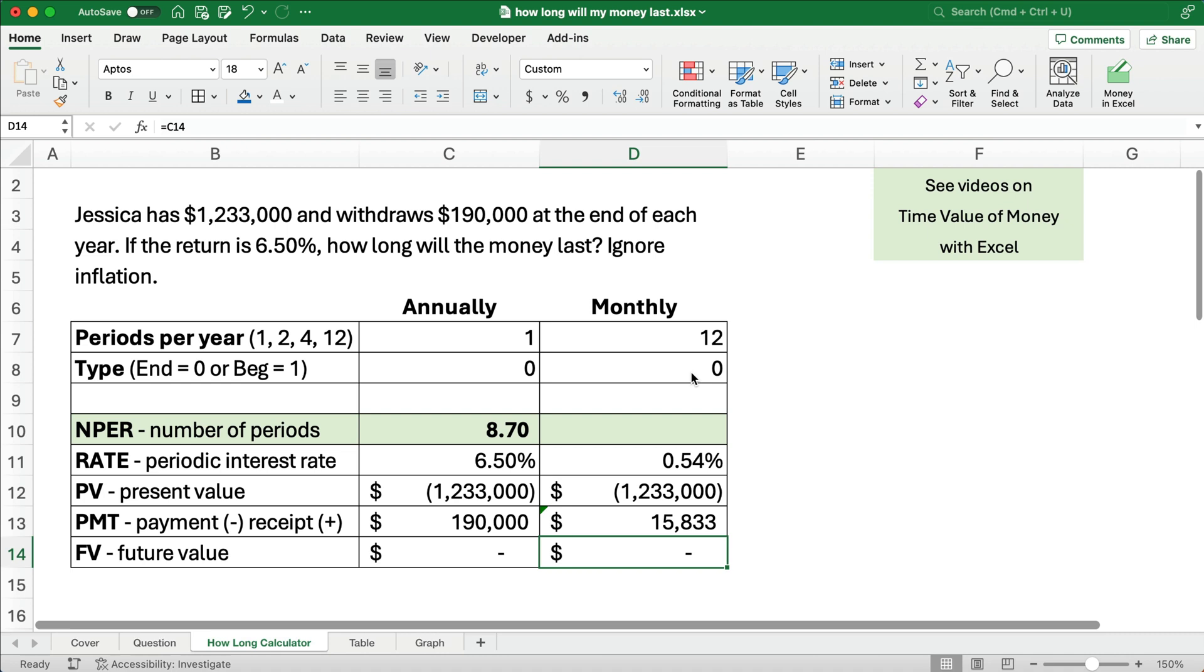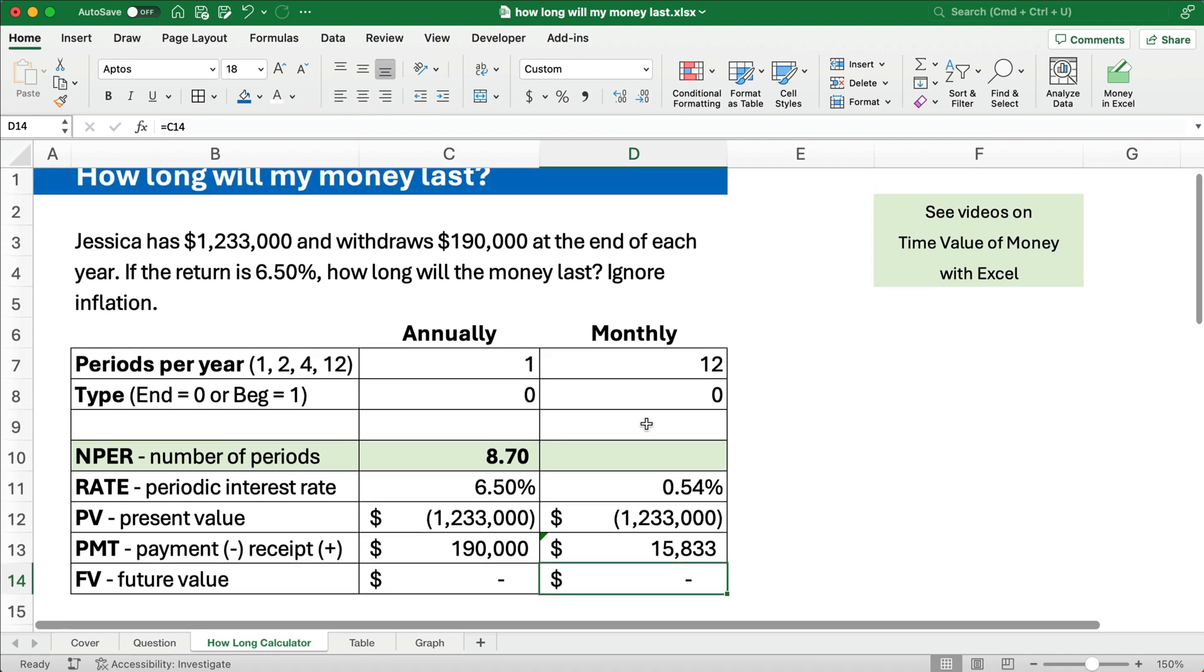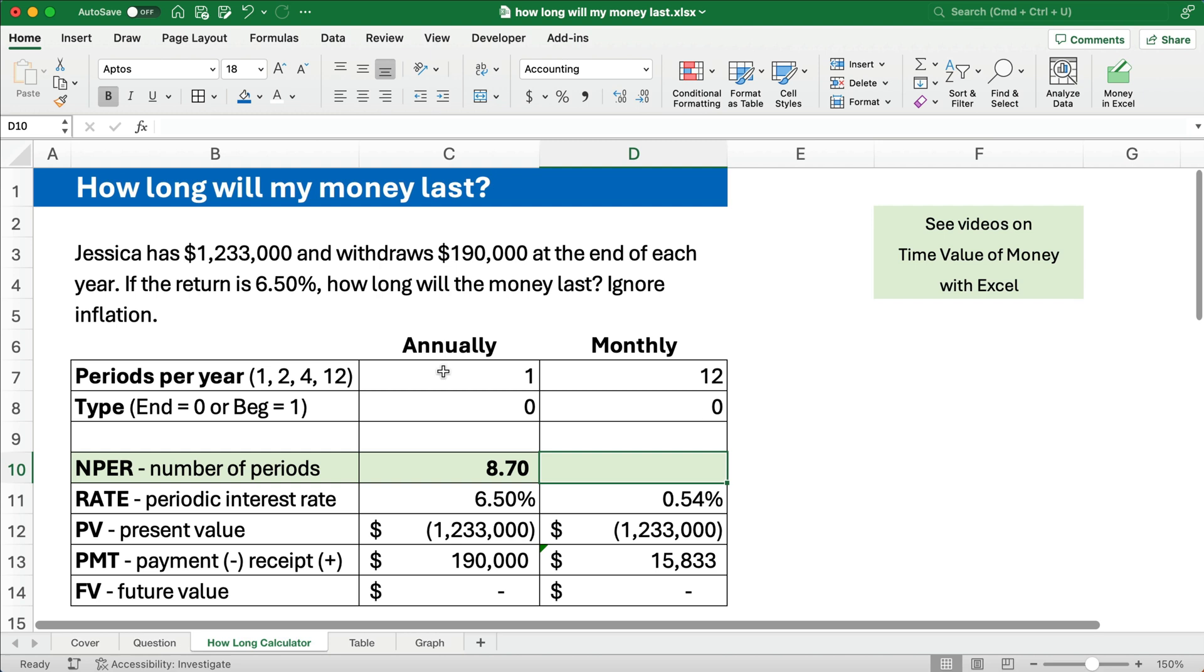And the future value is still going to be zero. So on this one, we're saying, well, we're taking out monthly amounts of $15,833. So how many months would we have? Well, so we do the same kind of thing. We're going to calculate the number of periods. So I'm going to do FX up here, number of periods.